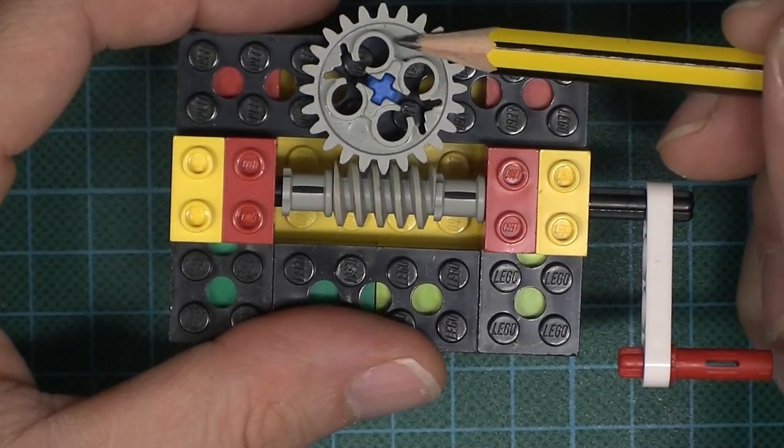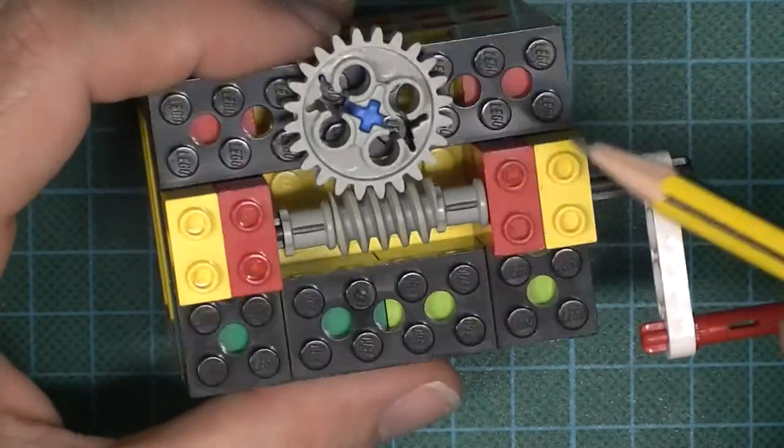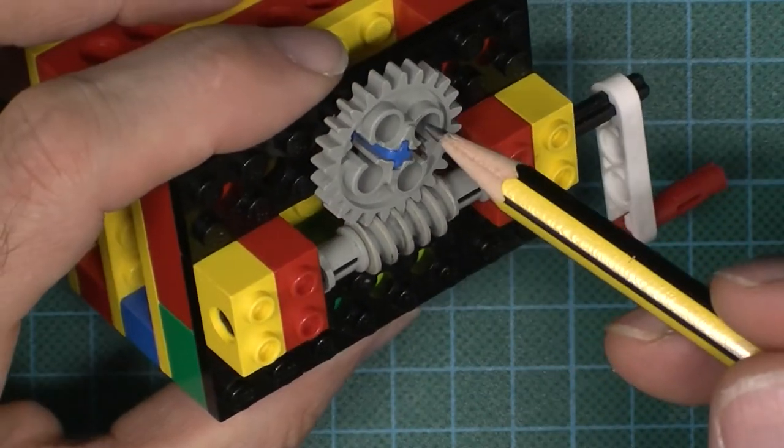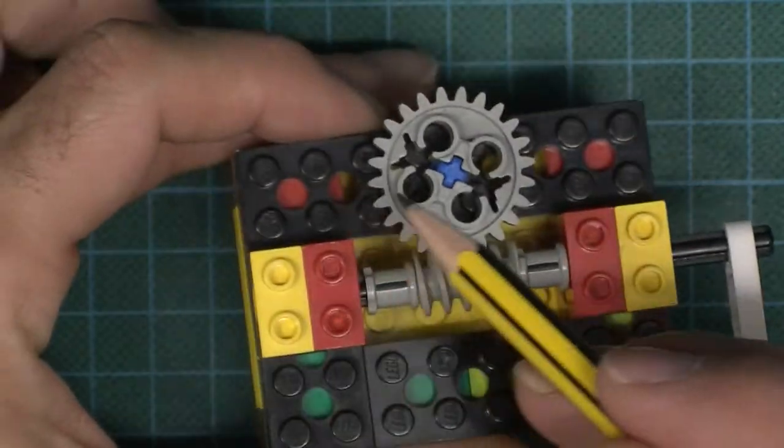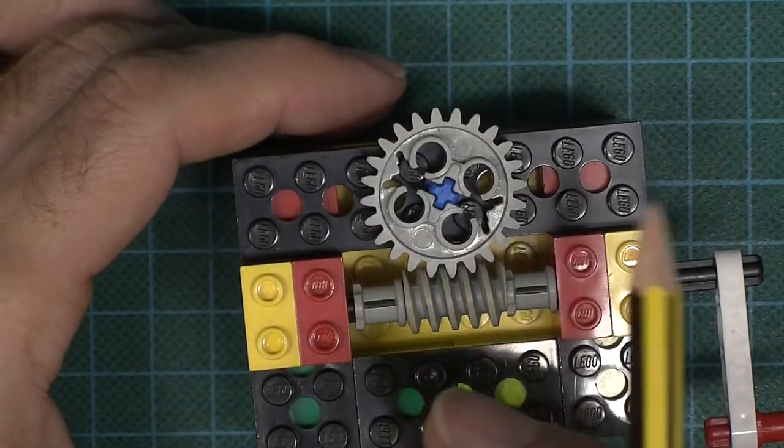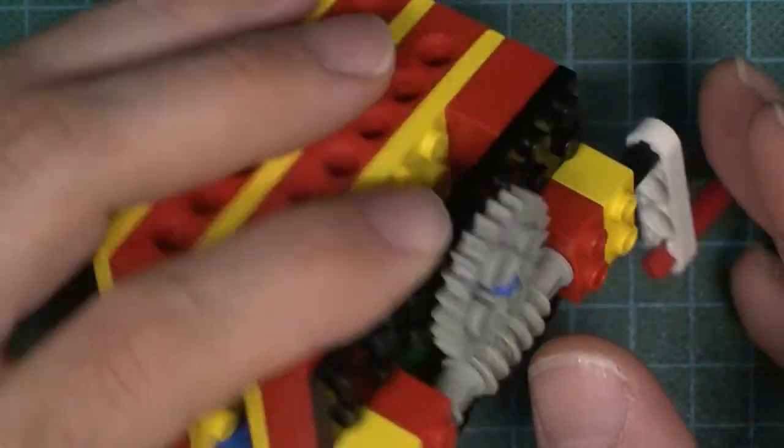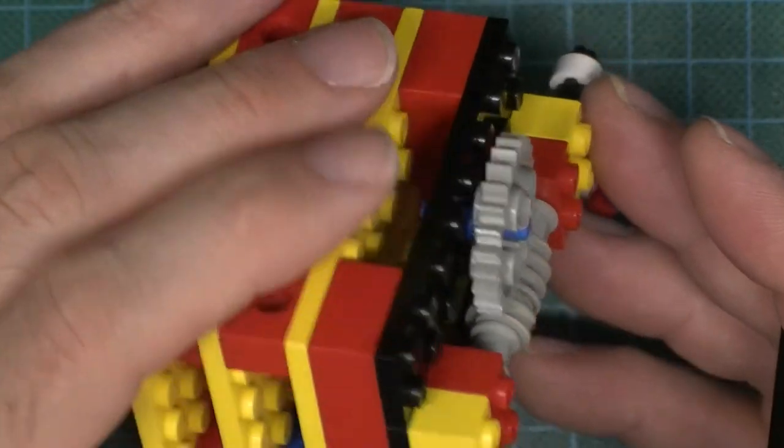So that takes us to the next part. This is called the worm wheel. I'm going to call it the worm wheel here. Actually, strictly speaking, it's a Lego spur gear which is slightly different, but for our model it's as good as.